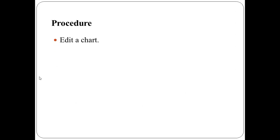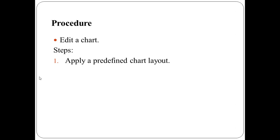Now let us discuss the steps to edit a chart. First, you can apply a predefined chart layout. To do this, click anywhere in the chart that you want to format using a predefined chart layout. This displays different chart tools. Choose the relevant tool to activate the chart layout, then click the chart layout that you want to use. You can also apply a predefined chart style by clicking anywhere in the chart to format it using a predefined chart style.